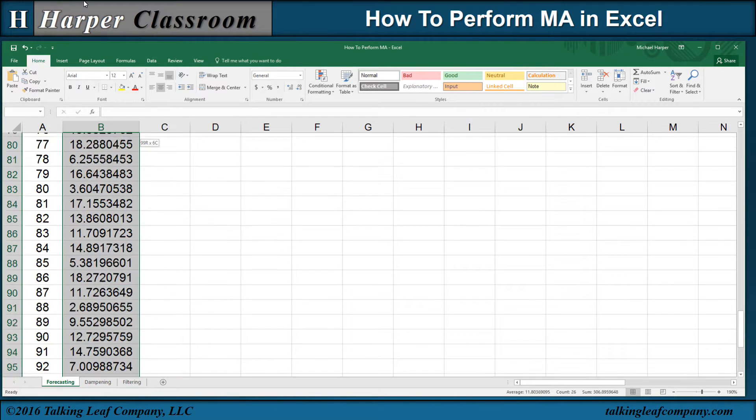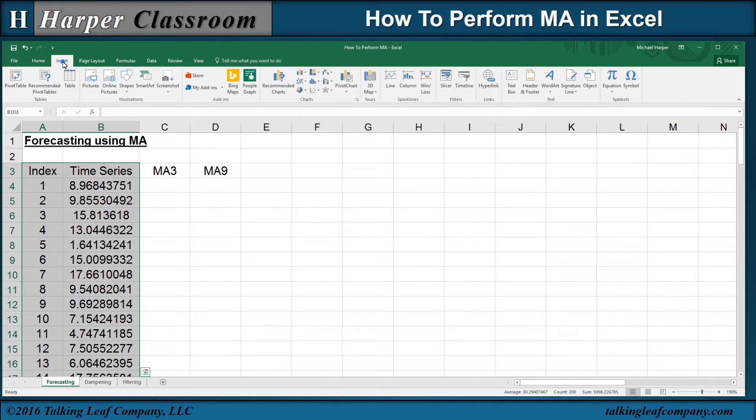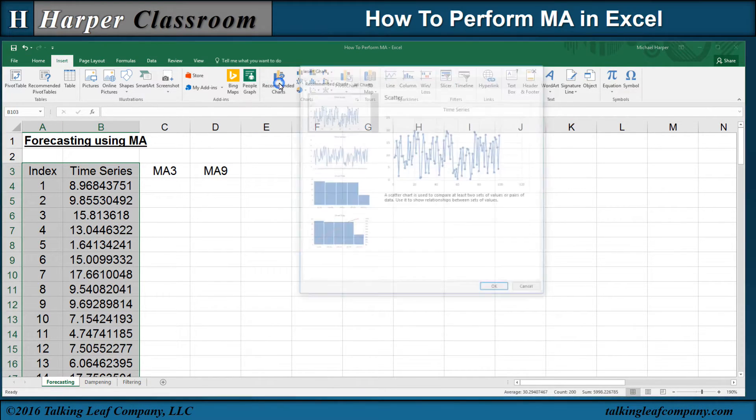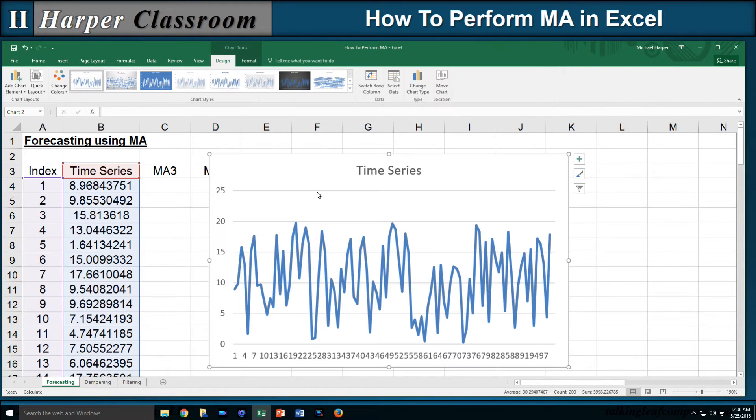Now if I want to highlight the index and time series and plot it, I go to Insert, Recommended Charts, and here I say OK, and there's what my time series looks like. It's a random component with a stationary time series.